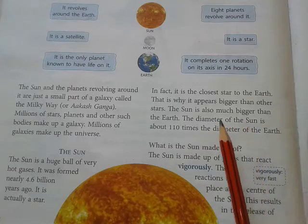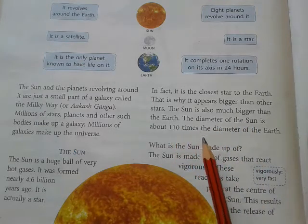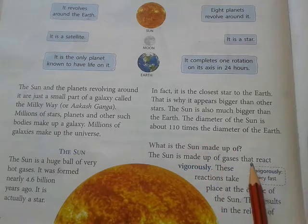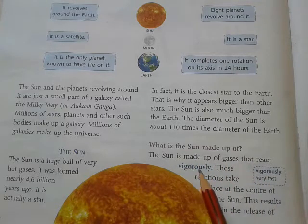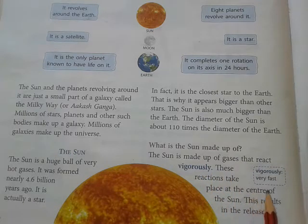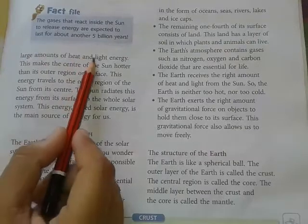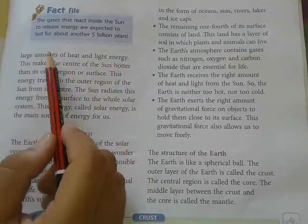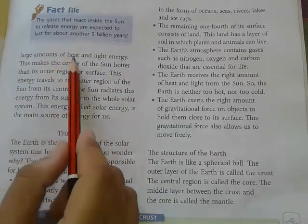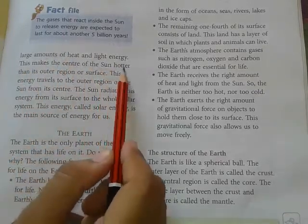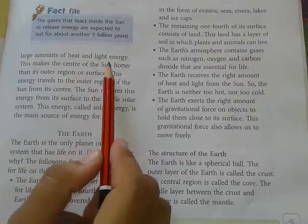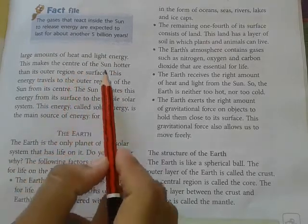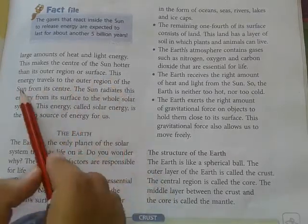The Sun is made up of gases that react vigorously and release light energy. This makes the center of the Sun much hotter than its outer surface. This energy then travels from the center outward to the outer region of the Sun.